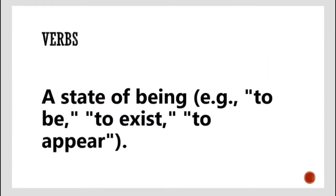The third type is a state of being: to be, to exist, to appear. A state of being means to be present. If someone is there, that person is present. To exist means that person has left. To appear means that person has become visible or invisible. For example, in a magic trick, there was an apple in my hand, but suddenly that apple disappeared, or it appeared elsewhere. So this is all known as a state of being.